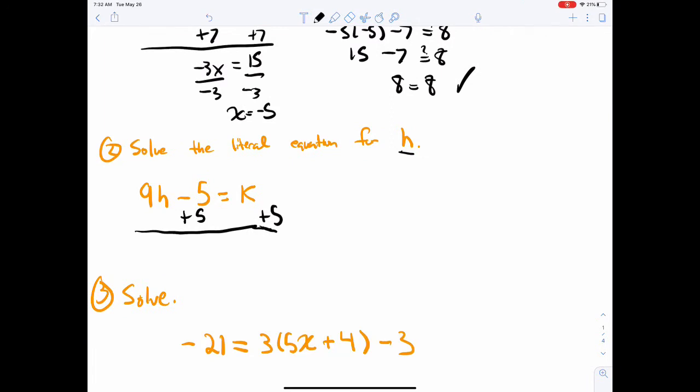Now, can we add k and 5 together? No we can't, those aren't like terms, so we'll just write it to the right of it. Then we'll have 9h equals k plus 5. And then to get h by itself we'll just divide by 9 to both sides. So that'll be our answer: h equals k plus 5 divided by 9.